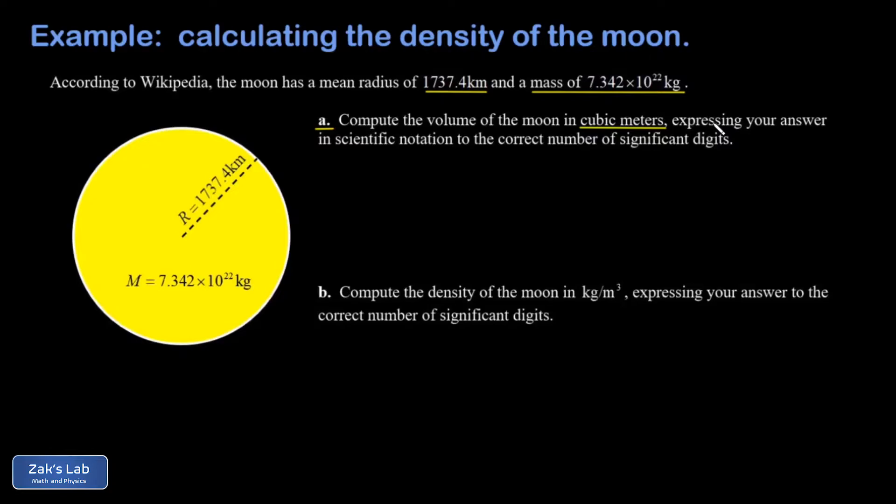I look at that radius and think, well, that's 1.7374 × 10³ kilometers. If I multiply that by a thousand to get meters, it becomes 1.7374 × 10⁶ meters. Then I apply the formula for the volume of a sphere: V = 4/3 π r³.